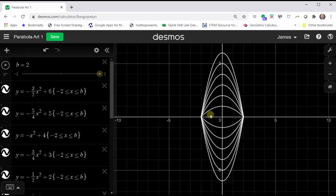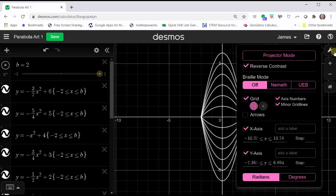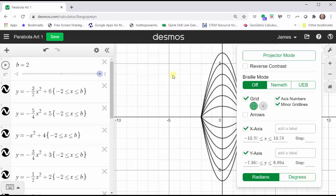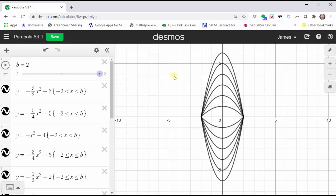We can also change the color of each piece by clicking and holding on any of the white circles on the far left. Notice how we have an option of six colors. Let's go back to regular mode, and we still have six different colors to select from.